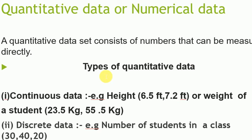In discrete data, there is the number of students in a class like 30, 40, 20, or number of vehicles on the road like 100,000. These are the two major different types of data that we discussed.